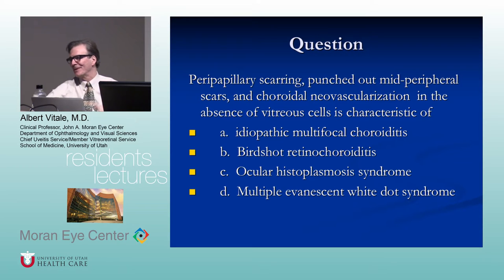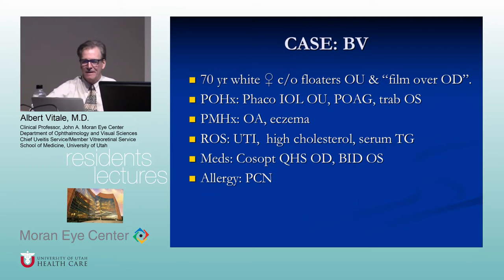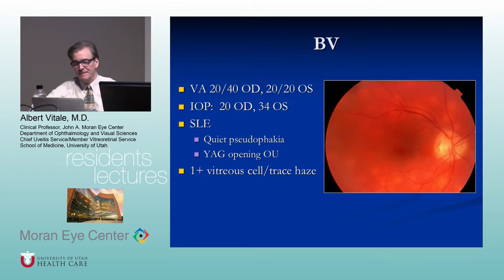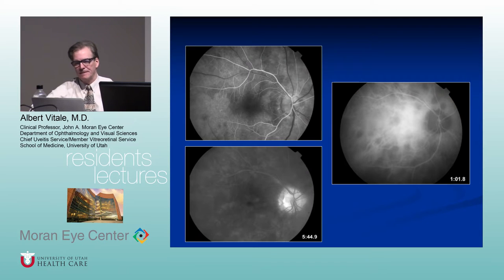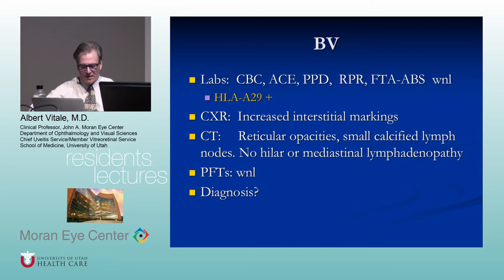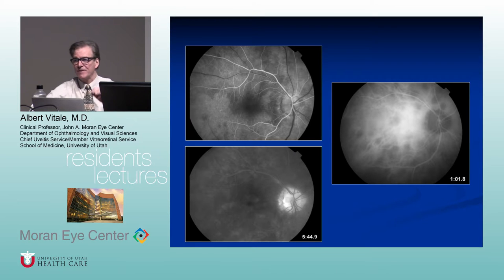This is a patient with birdshot chorioretinopathy. You can see creamy lesions in the choroid, usually concentrating around the optic nerve, with mild vitritis and pretty good visual acuity. The angiogram is more useful in showing the vasculitic component and optic nerve involvement, while ICG shows the lesions more clearly than fluorescein angiography.